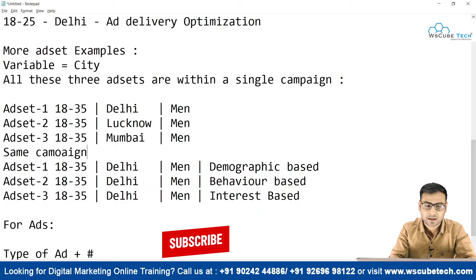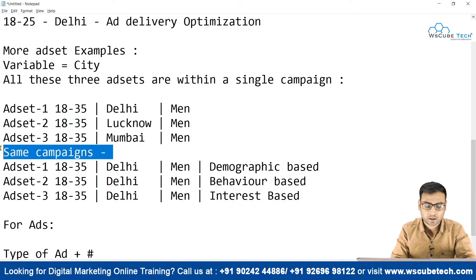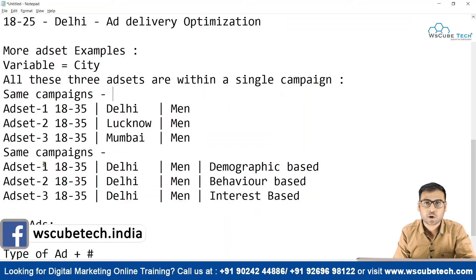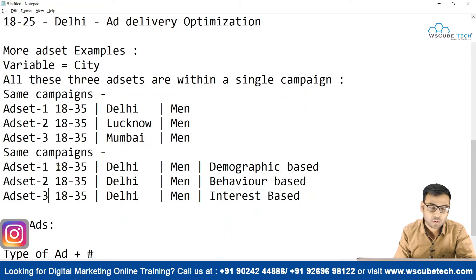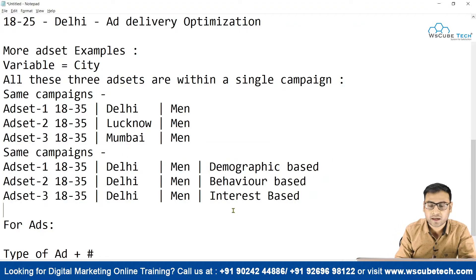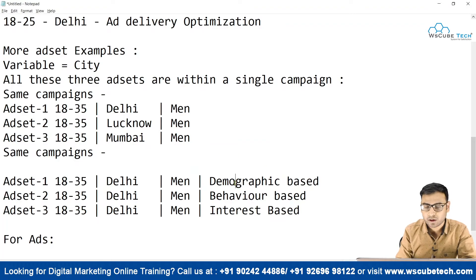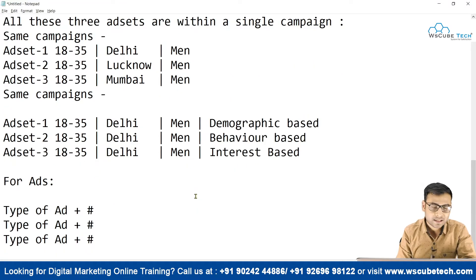Here is another example for the same campaign where we are creating different ad sets. Ad Set 1, 2, and 3 give us an idea of how many ad sets we have. The 18–35 age group is the targeting, same location, same gender, but here we are targeting cold audiences based on demographics, behavior, and interest respectively. So if we are creating different ad sets for different target audiences, we can structure the names this way.